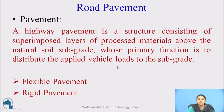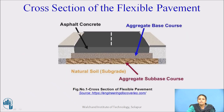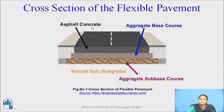Pavement is further classified as flexible pavement and rigid pavement. Flexible pavement is composed of a bituminous material surface and underlying base and subbase course. Looking at the cross-section of flexible pavement, the lowermost part is the subgrade soil, then the subbase course, over that the base course, and the topmost part — the pavement — is made up of asphalt, concrete, or bituminous material.